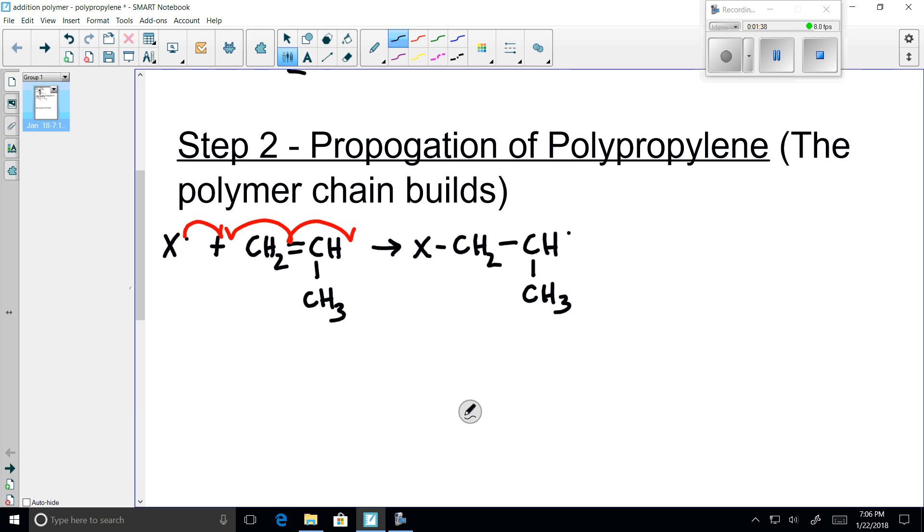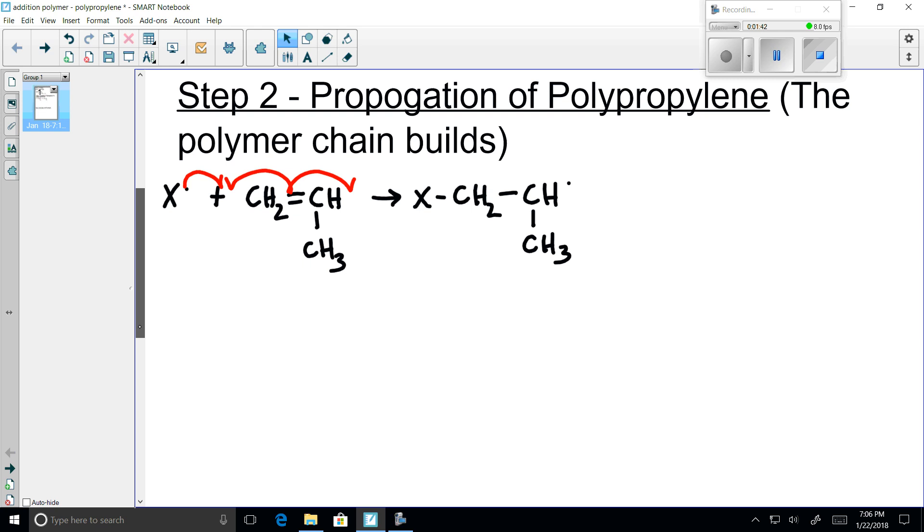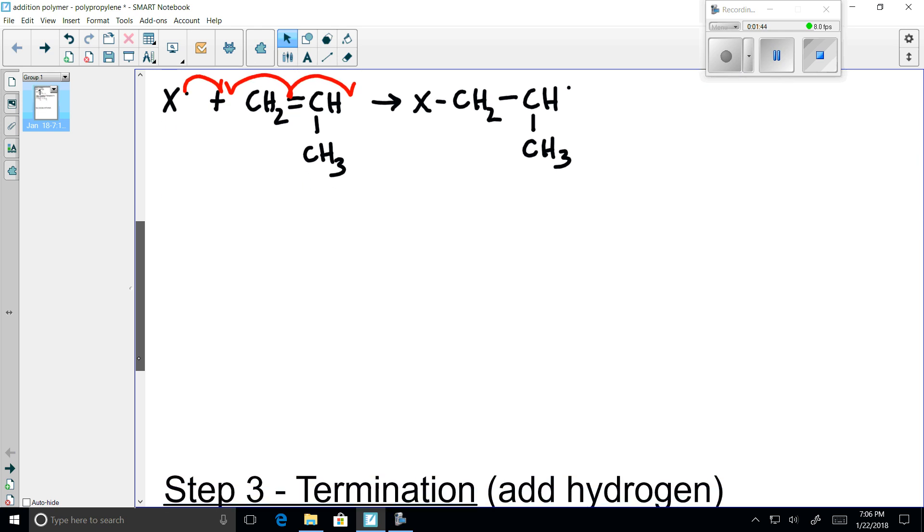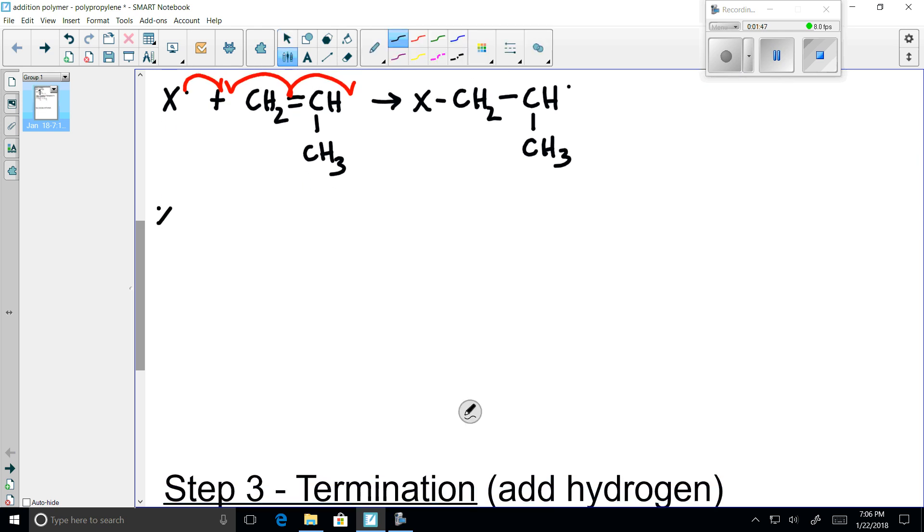The product from step one becomes the reactant into step two. So we simply add another piece of the monomer material.